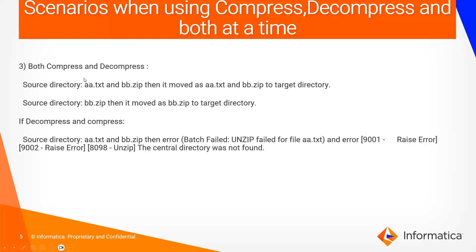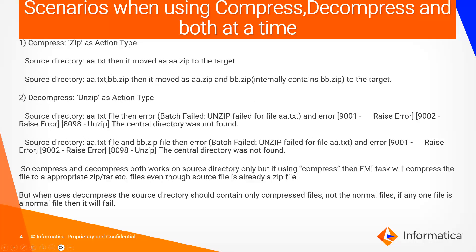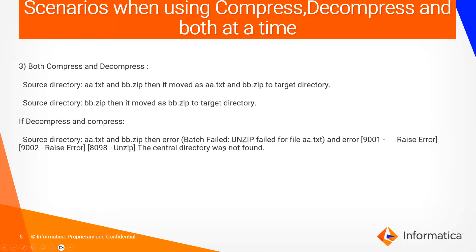Sequence is very important when dealing with the action step in an FMI job. If you change the sequence to decompress first and then compress, then what happens: a.txt undergoes decompression first. Since a.txt is a normal file, as per the rule, it will definitely fail — unzip failed for file a.txt — even though bb.zip is present, decompression won't happen for any file.